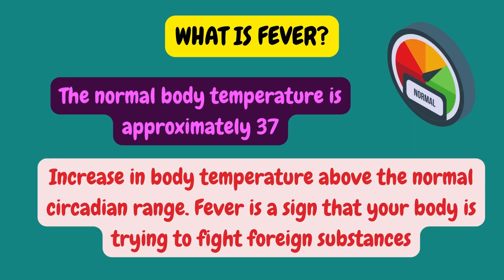Let's first recognize the normal body temperature. The normal body temperature is approximately 37 degrees Celsius. Any increase above 37.5 is termed as fever. Therefore, the definition of fever is an increase in body temperature above the normal circadian range. Fever is a sign that your body is trying to fight foreign substances.